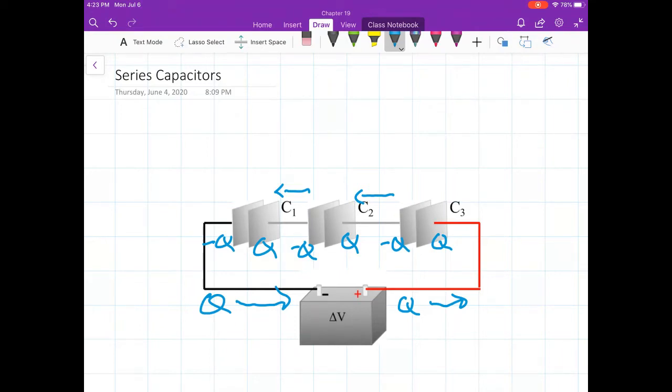So you see what it means by series. Whatever enters one of them has to leave the other end, enter the next one. So whatever enters, in this case it enters C3, leaves the other end of C3, enters C2, leaves the other end of C2, enters C1, leaves the other end of C1, goes back to the battery. In series, whatever enters one has to leave, enter the next one, and so on.